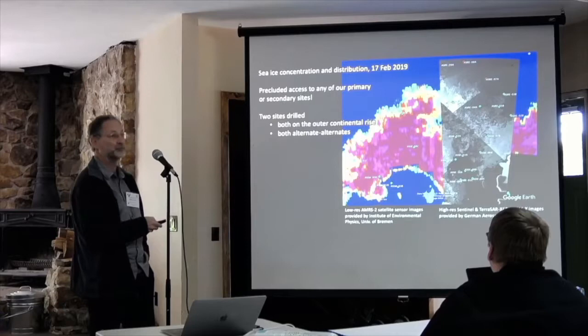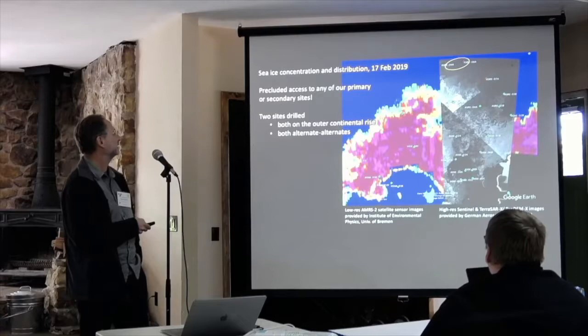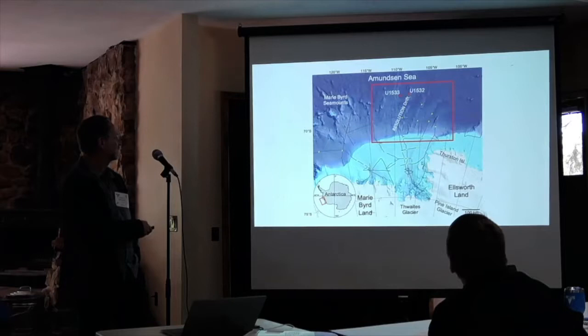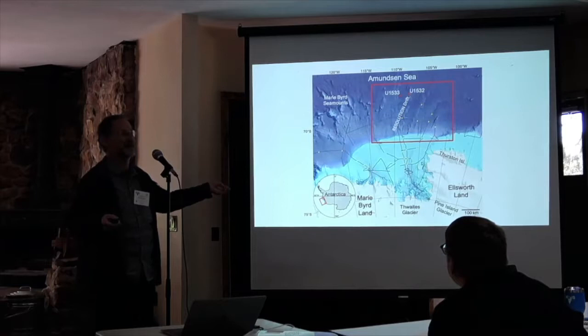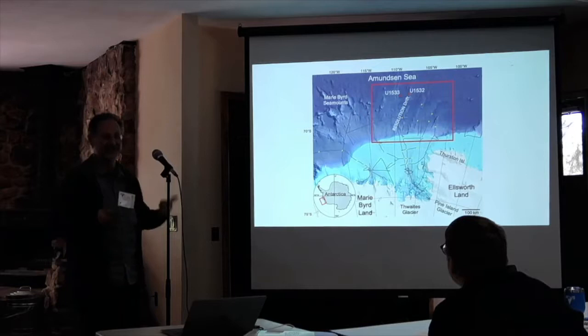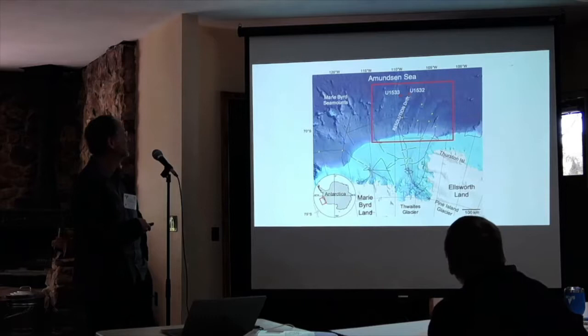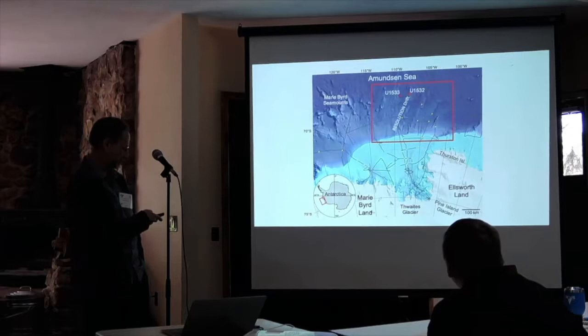The two sites we ended up drilling were both on the outer continental rise — out there in the yellow box. All of the sites proposed on the shelf are still available for drilling if we can get the ship back. Proposal went in in 2008; we drilled in 2019. The sites are U1532 and U1533, both on what we dubbed the Resolution Drift. Sea ice kept us off the shelf entirely, and we were pretty distal in the Amundsen Sea. We only had very few sunny days, but the icebergs were doing loops and figure eights.